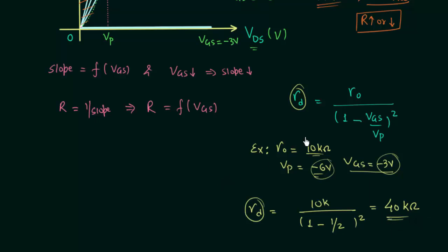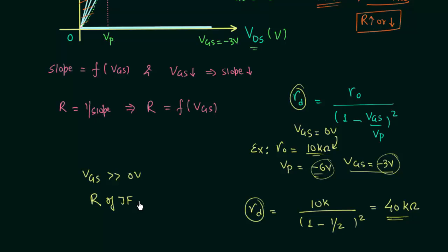So when VGS was equal to 0V the resistance was 10 kilohms, and when VGS equals minus 3V the resistance is 40 kilohms. If you make VGS more and more negative, the resistance of the junction field effect transistor will increase. On decreasing VGS the resistance of JFET increases, and this is why we can use the JFET as a voltage controlled resistor.